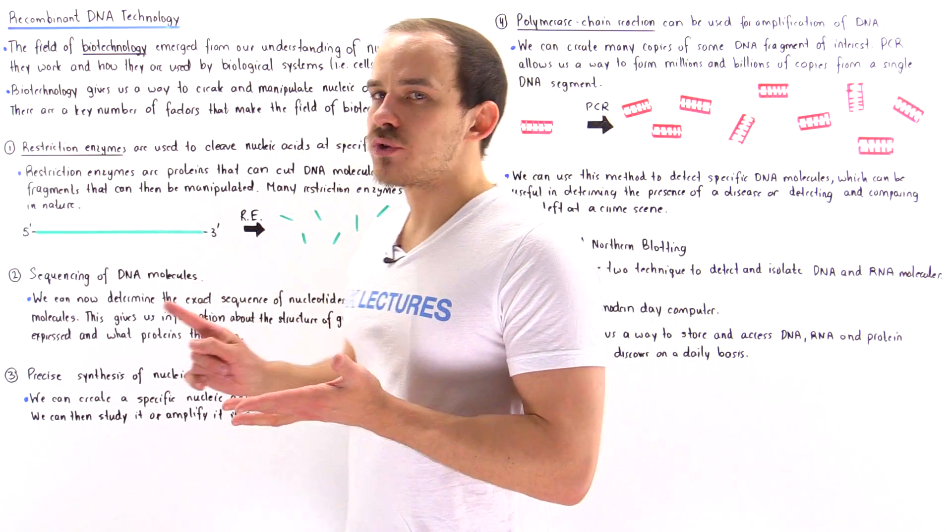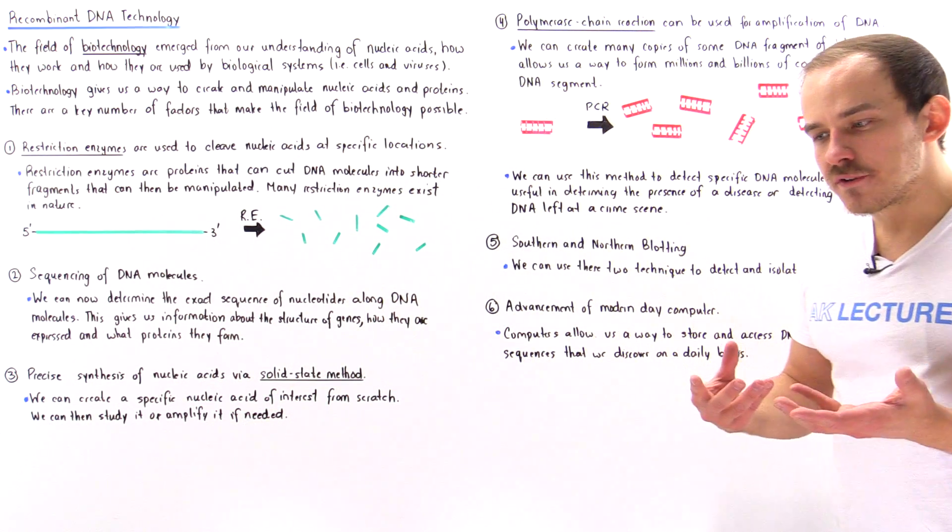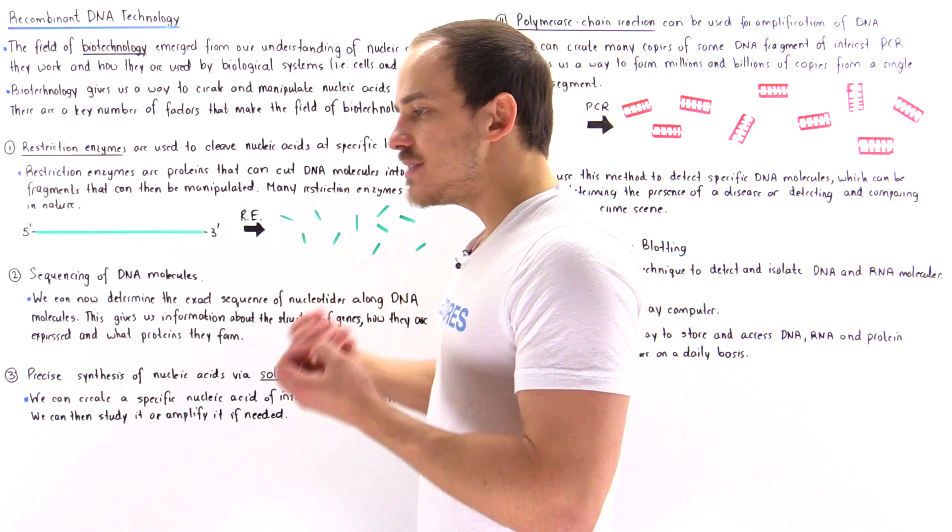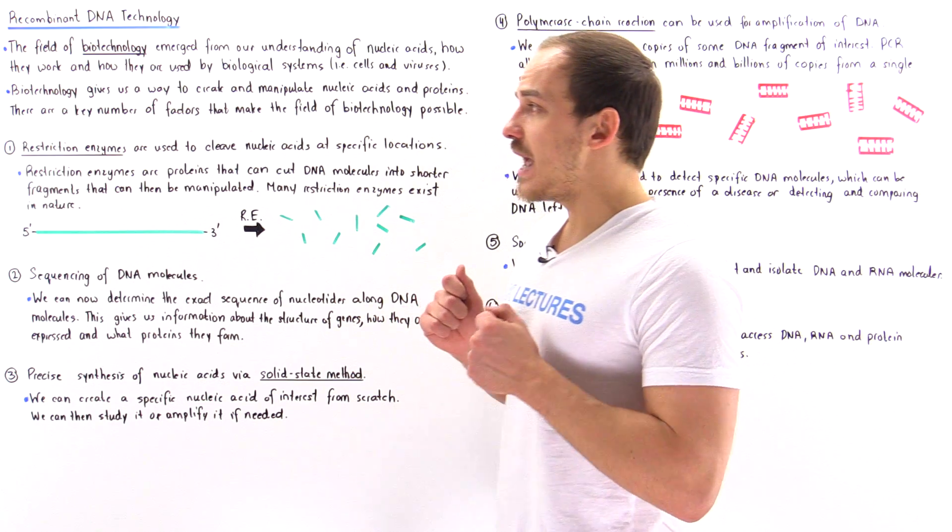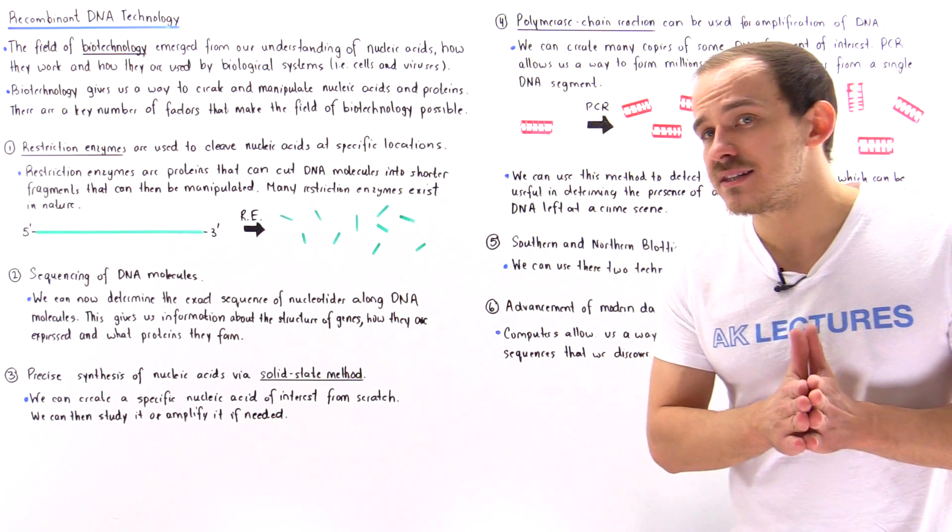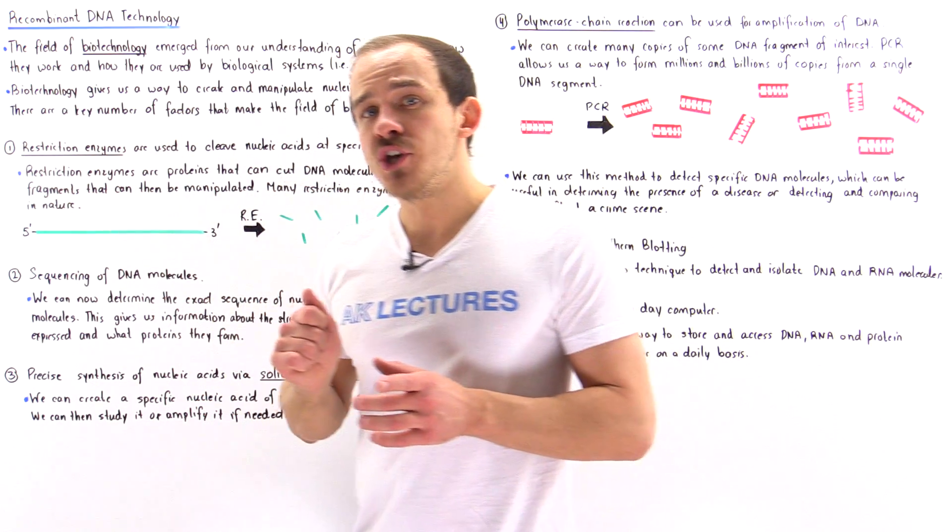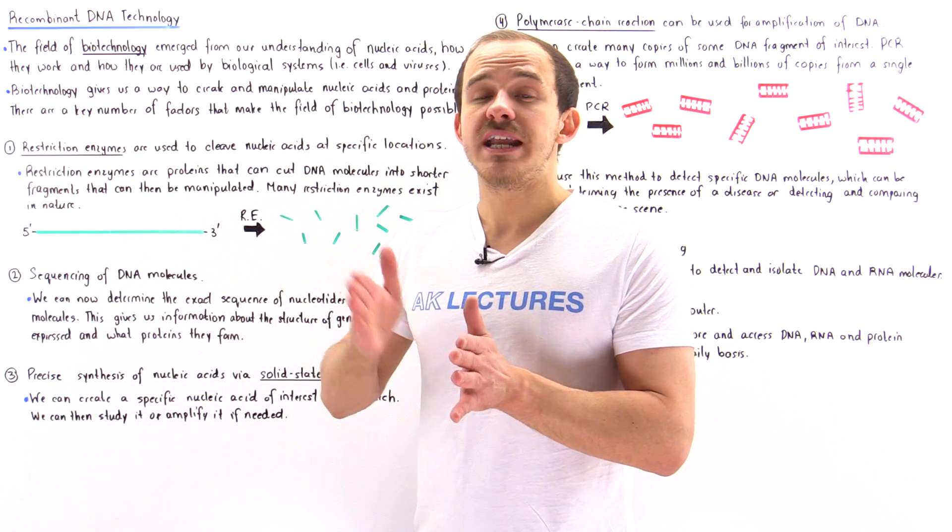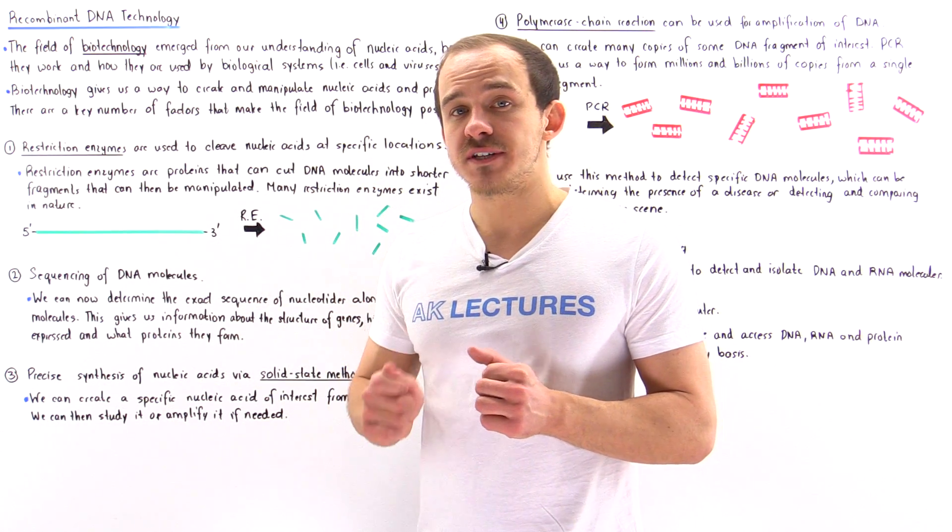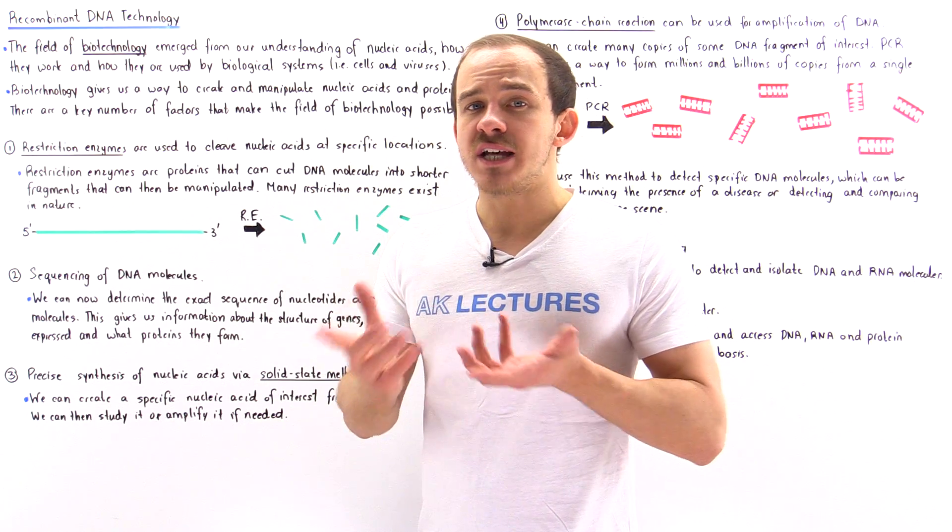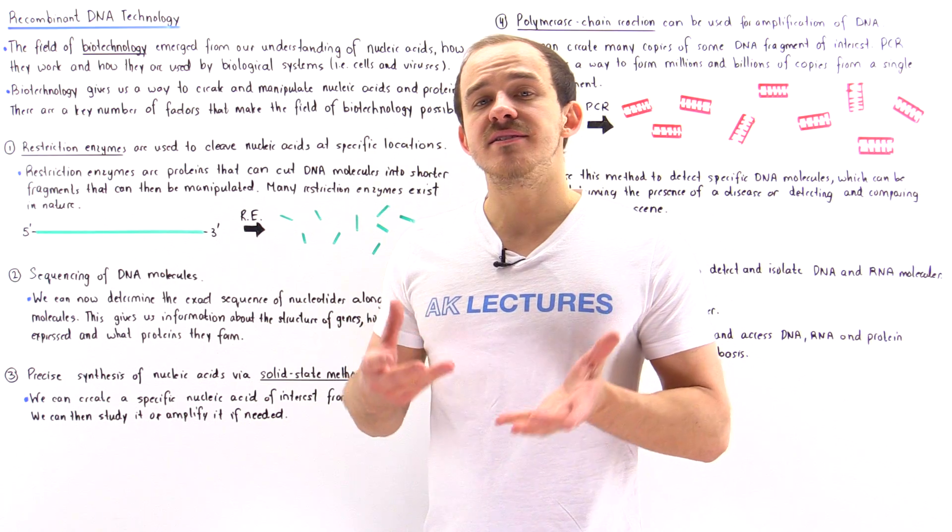So let's begin with factor number one, the existence of restriction enzymes. So restriction enzymes were essentially discovered, and these biological molecules exist in bacterial cells, and bacterial cells use these restriction enzymes to basically protect themselves from viral agents. So what these restriction enzymes do is they cleave DNA molecules or RNA molecules at specific locations, at specific sites. And there are many different types of restriction enzymes, also known as restriction endonucleases, that exist in nature.